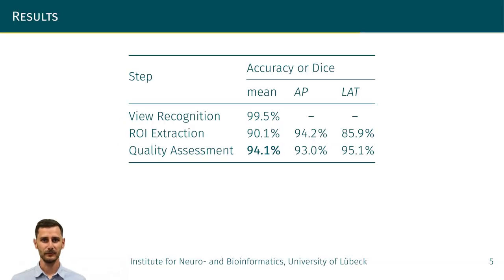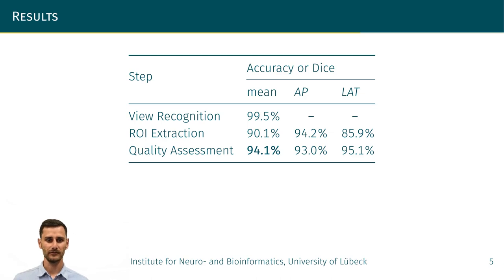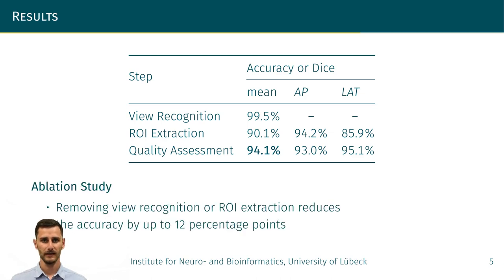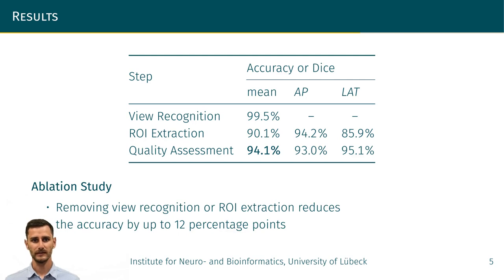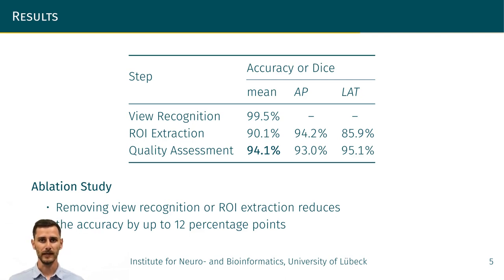Using these datasets, we tested each step of our framework individually. For the final quality assessment, we achieved a mean accuracy of 94.1%. As an application study, we tested the accuracy when removing view recognition or region of interest extraction from the framework. Our experiments showed a decrease of accuracy by up to 12 percentage points, supporting the choice of our pre-processing steps.